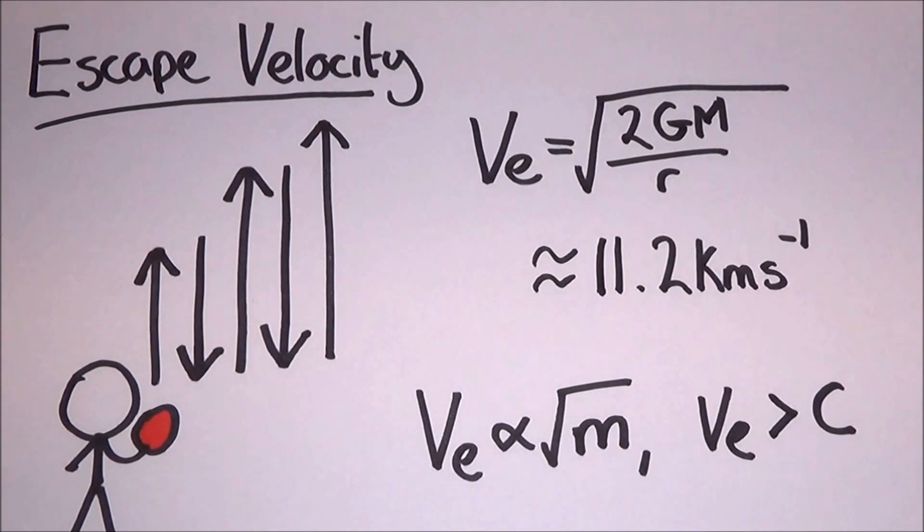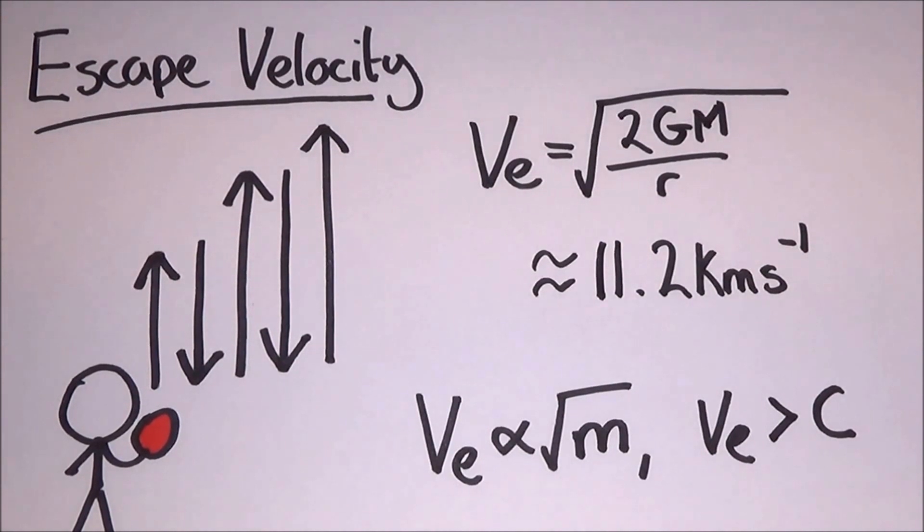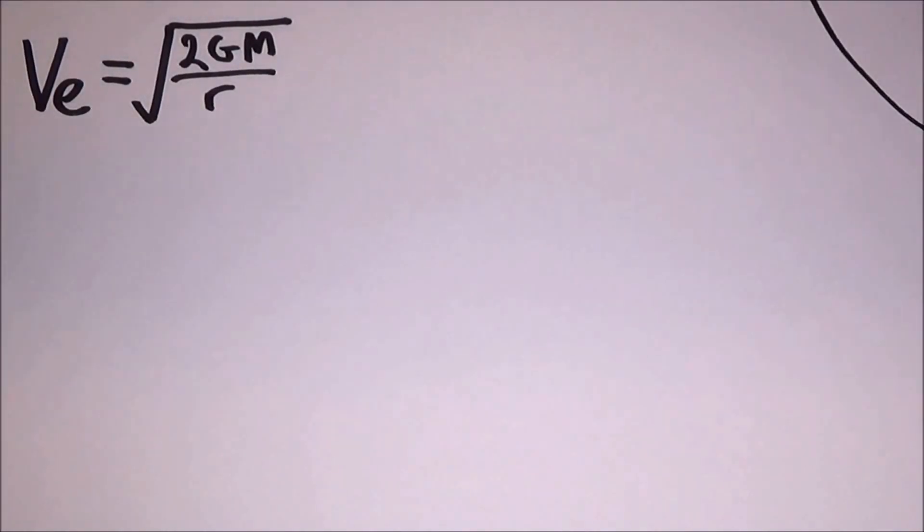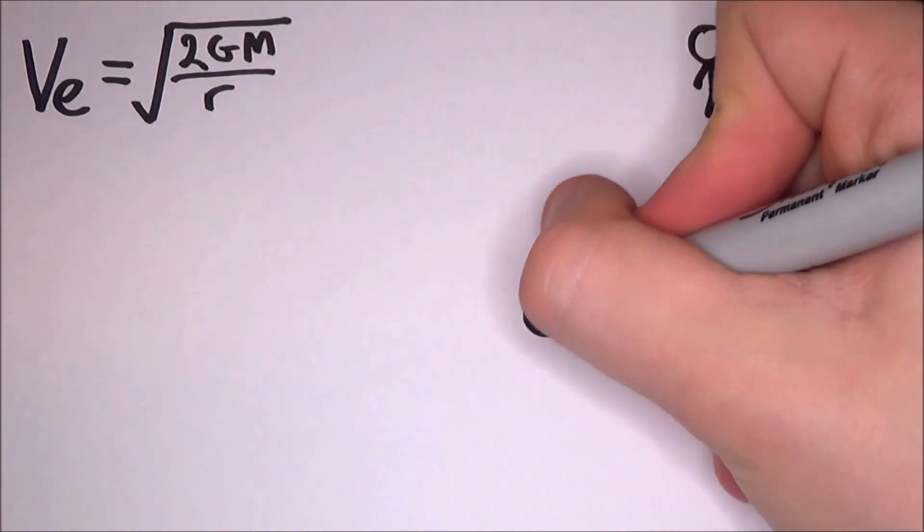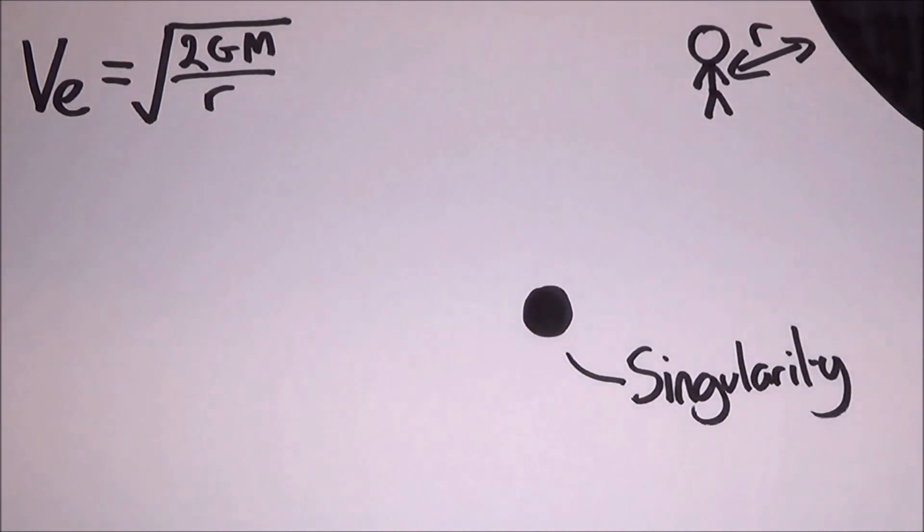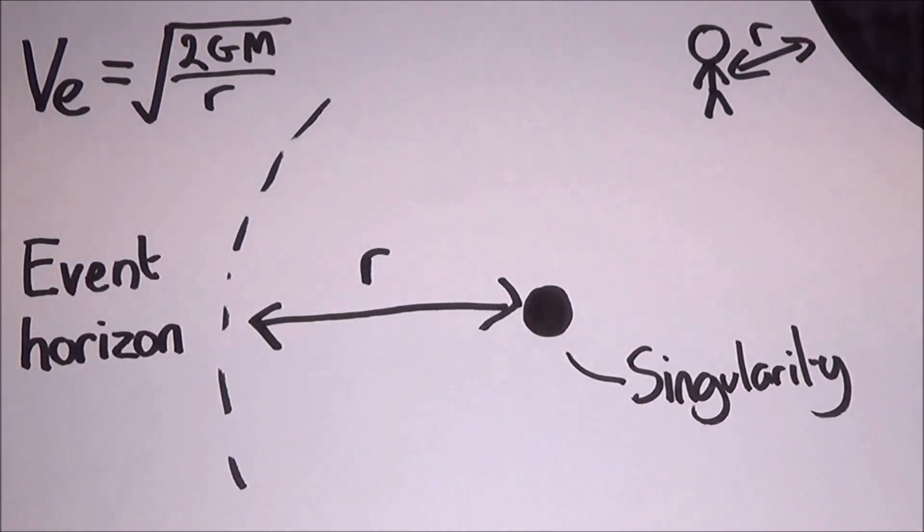You can see how the formula for escape velocity is proportional to the square root of M. So if there was an object with such a large mass, its escape velocity would exceed the speed of light. You can also see that escape velocity depends on how close you are to the black hole, i.e. the closer you are, the faster you have to go to escape. Now black holes are known for having escape velocities that are higher than the speed of light, but what I'm saying is that there must be a point where the distance of the black hole is large enough that the escape velocity comes back down below the speed of light. This point is actually known as the event horizon.